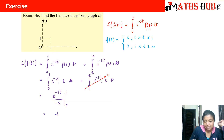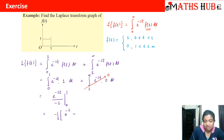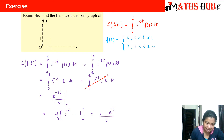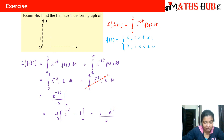Taking out -1/s common: substituting t=1 gives e^(-s), and substituting t=0 gives e^0 = 1. So this finally becomes (1 - e^(-s)) / s. I hope you understood how to calculate the Laplace transform when the graph of the function is provided to us.